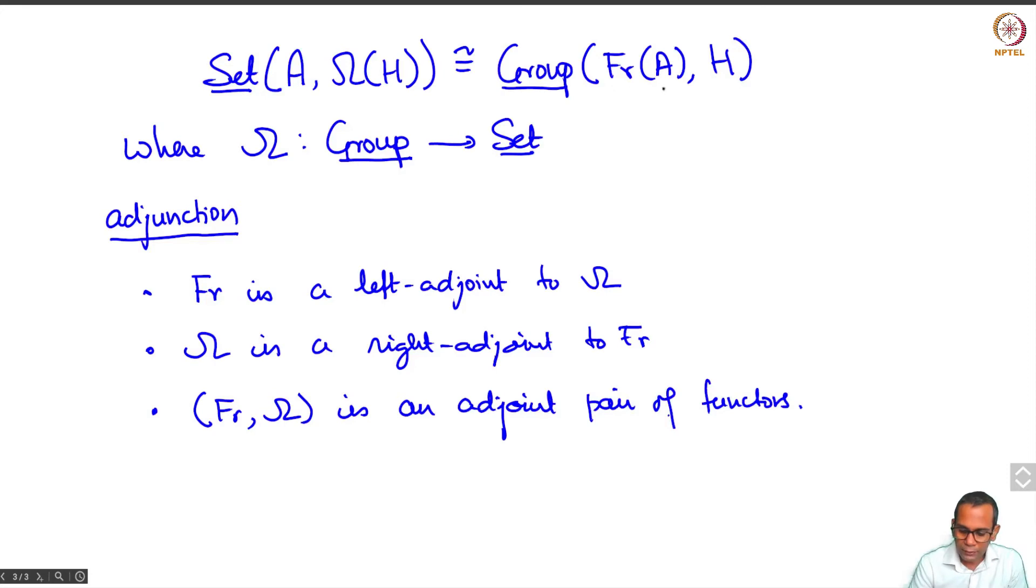And you're allowed to have morphisms from a to h. This is what we called f. And arrows from free a to h, this is what we called f sharp. And this was a bijective correspondence. So let me make this idea of a junction more precise.